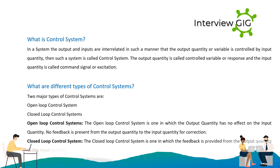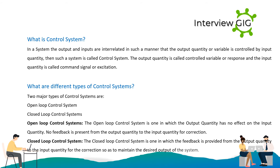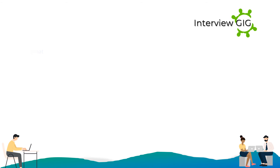A closed loop control system is one in which feedback is provided from the output quantity to the input quantity for correction, so as to maintain the desired output of the system.